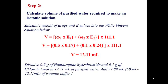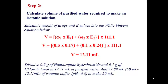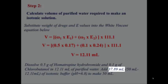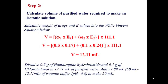In practice, you dissolve 0.5 grams of homatropine hydrobromide and 0.1 grams of chlorobutanol in 12.11 milliliters of purified water. Then you add 37.89 milliliters of isotonic buffer to reach a total volume of 50 milliliters.